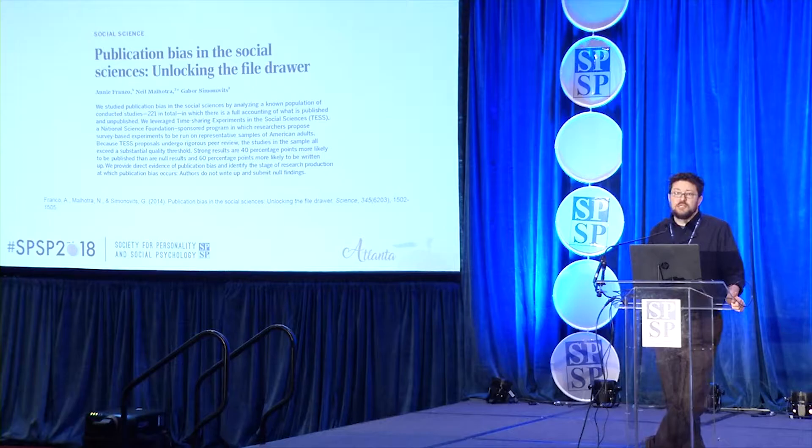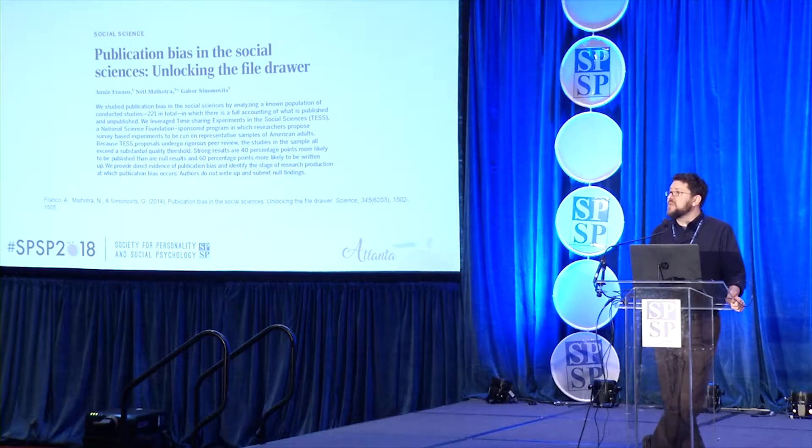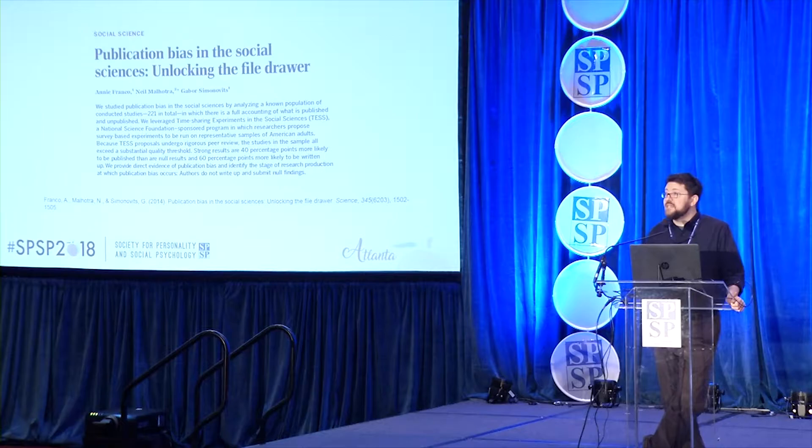We've known that this is a problem for the field for a long time. We have a very bad word for this problem called publication bias. But for the most part, we've been able to ignore it because we haven't had a way to estimate the extent to which it plagues our field. Fortunately, in recent years, a number of creative researchers have found ways to estimate to what extent publication bias might distort the nature of our empirical literature.